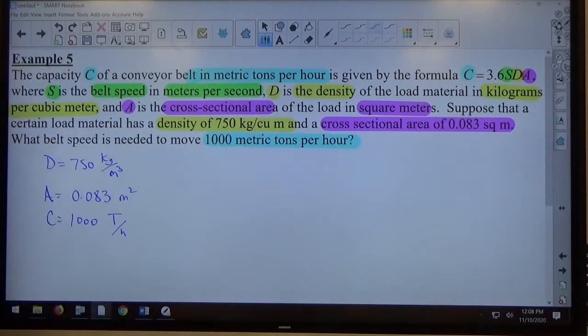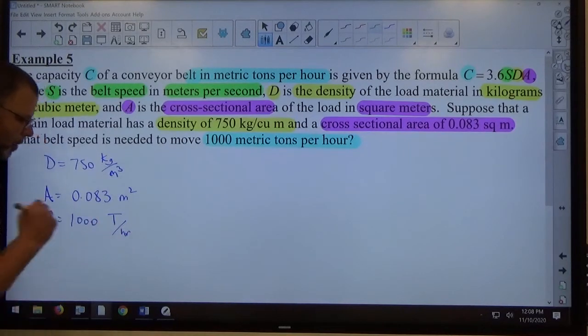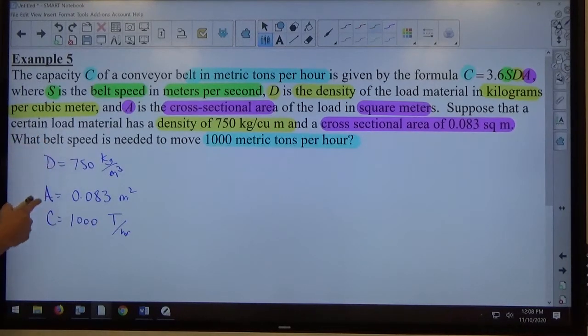I think it's capital T for metric tons. We'll just say T for now. So notice they've given me these three numbers, D, A, and C.